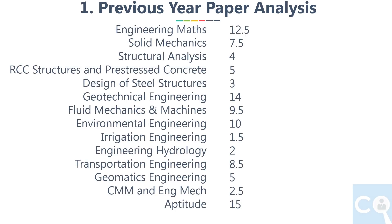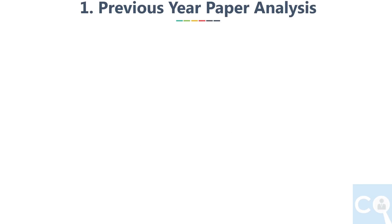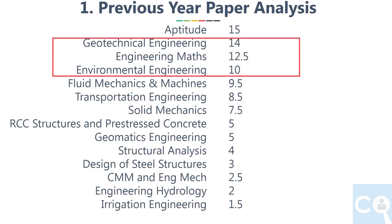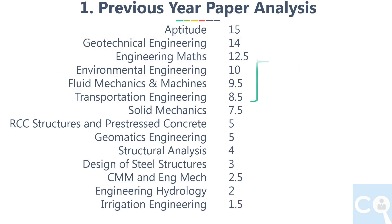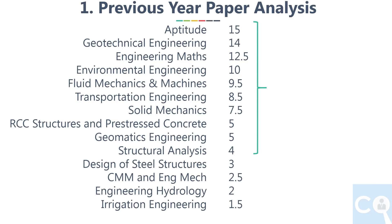Taking the average marks of each subject from 2014 to 2017, the list looks like this. The 2018 paper has not been included because that will be used in the full-length test to evaluate ourselves. Aptitude is included this time. Arranging from highest to lowest marks, geotechnical engineering is again on top followed by environmental engineering. If you total the top 4 subjects' average per year including maths and aptitude, you get around 69.5 marks. Adding the next 4 subjects — solid mechanics, RCC, geomatics engineering, and structural engineering — the total will be 91 marks. This is a similar subject list as seen in the previous 27-year total.